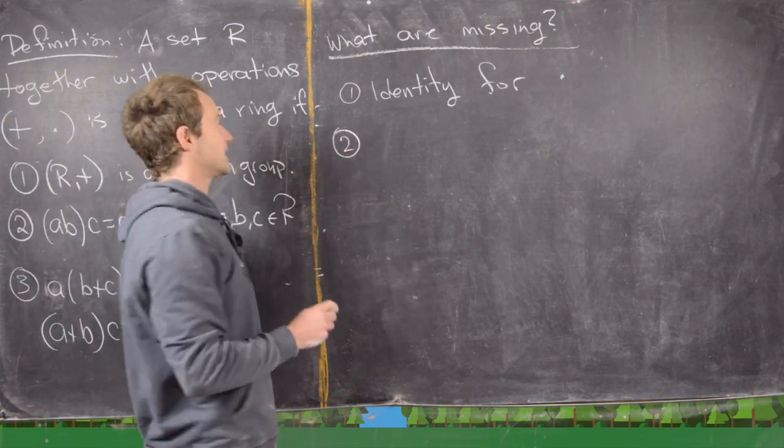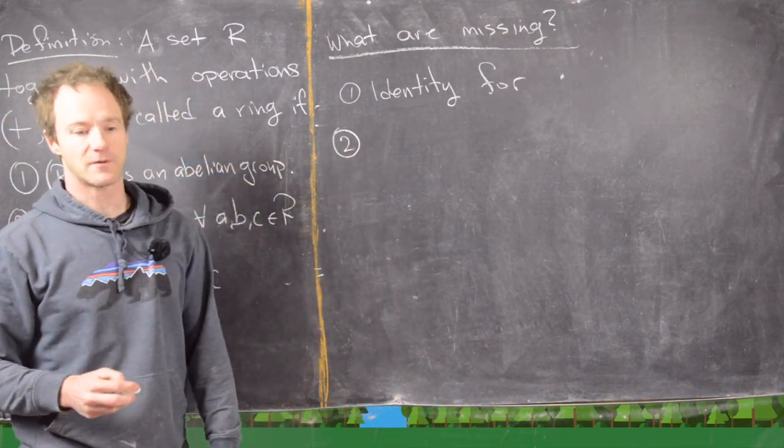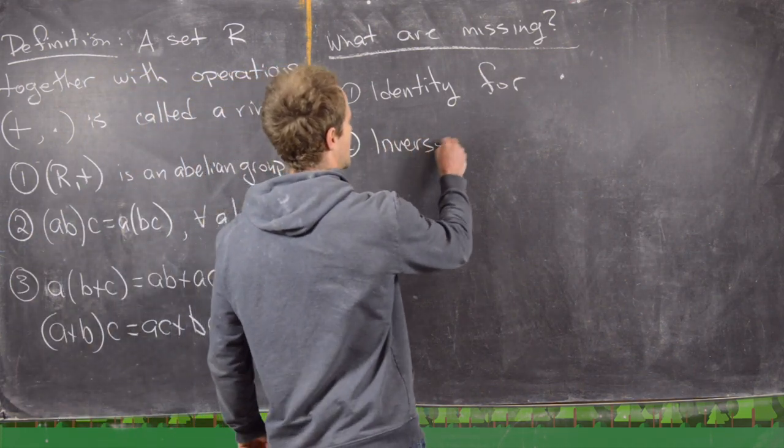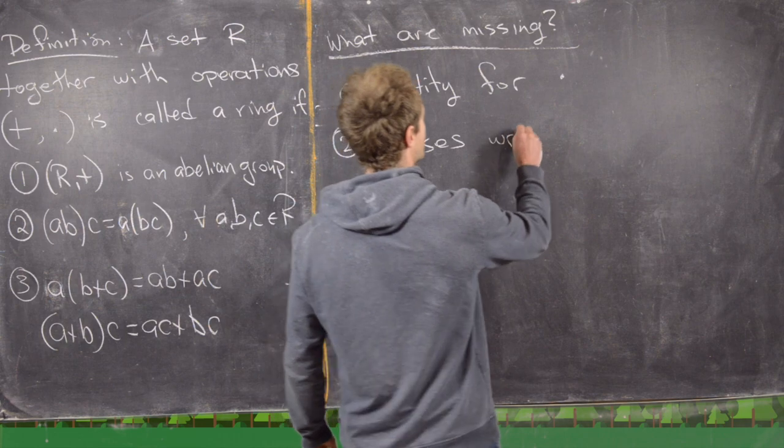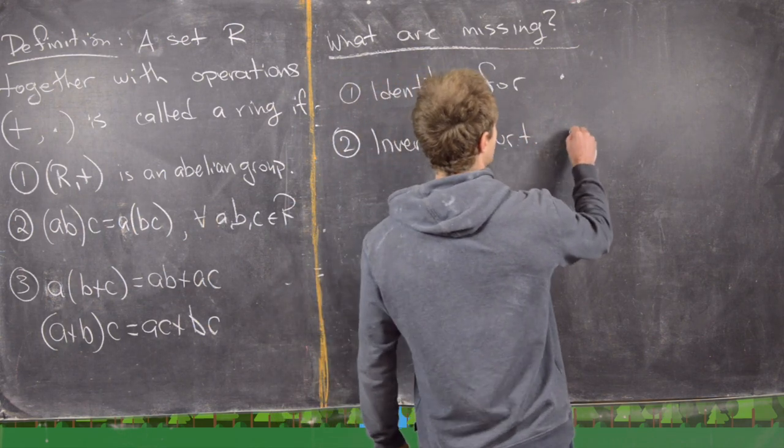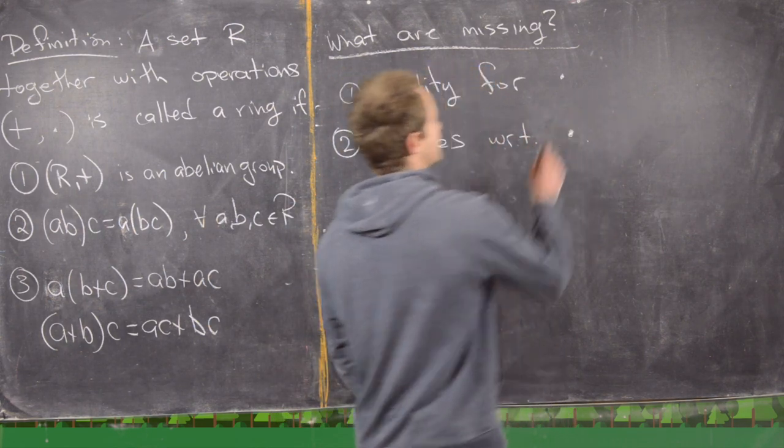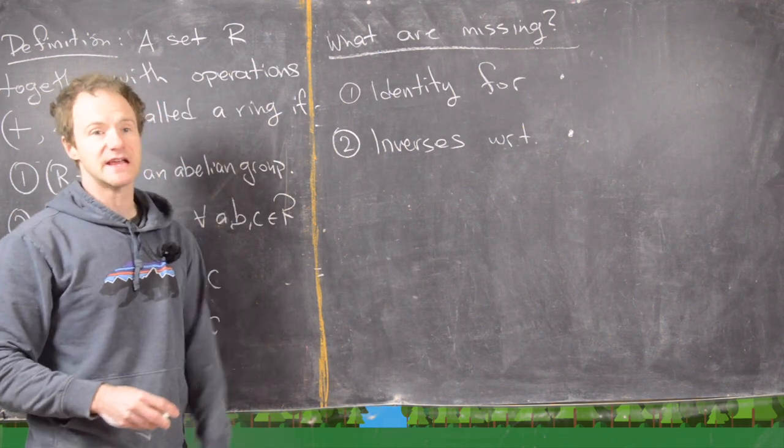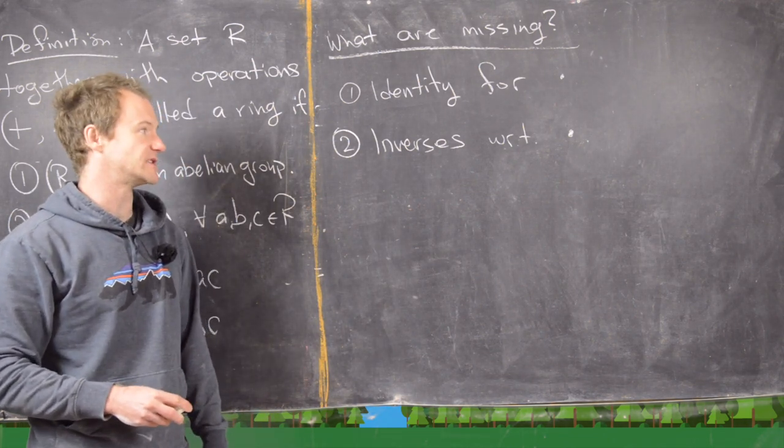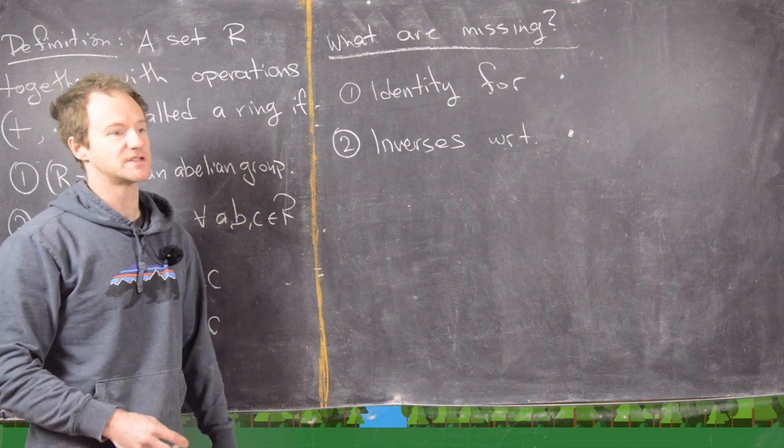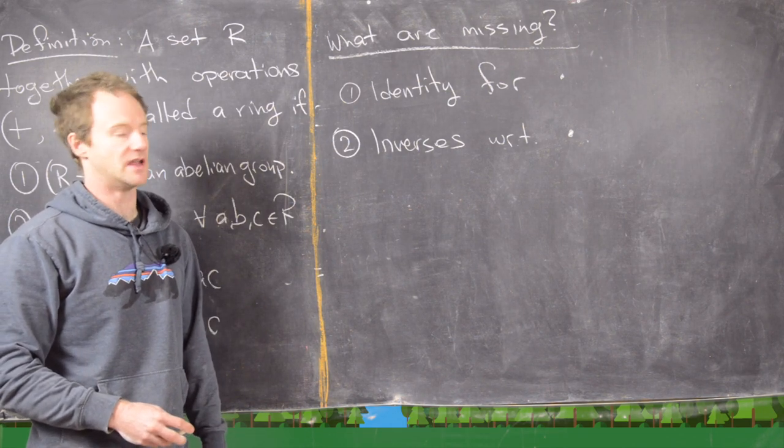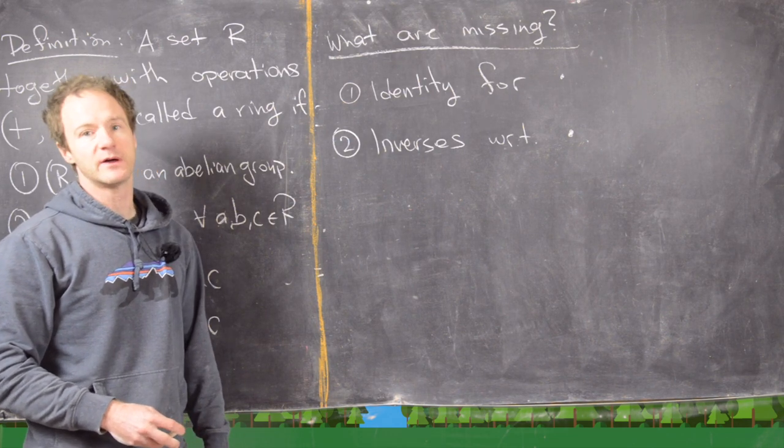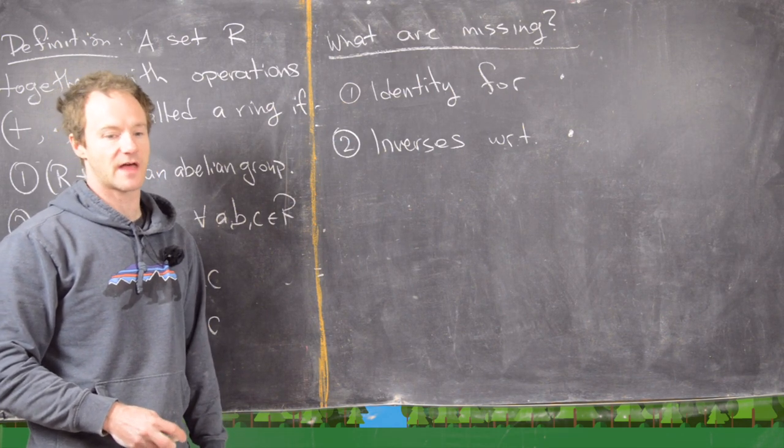And then something that goes along with the identity for multiplication is inverses. I'll say inverses with respect to this multiplication. So that might be something we also want to have. And what we will see is that we can't have inverses for every element. There's a special element which will never have an inverse. But sometimes we will have inverses for everything except for that element.